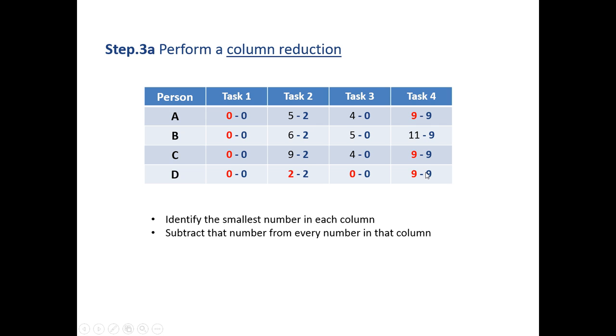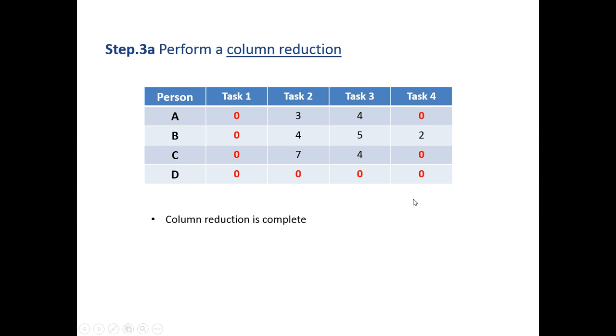We then subtract those numbers from every other element in that particular column. 0 is subtracted from everything in column 1, 2 is subtracted from everything in column 2, 0 again from everything in column 3, and 9 from everything in column 4. That further reduces the numbers on our table. Column reduction completed.